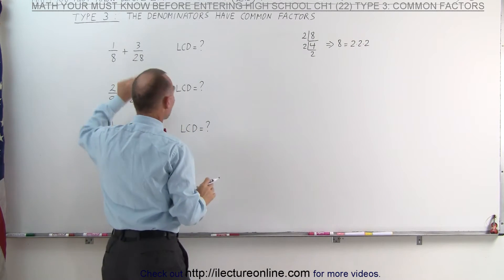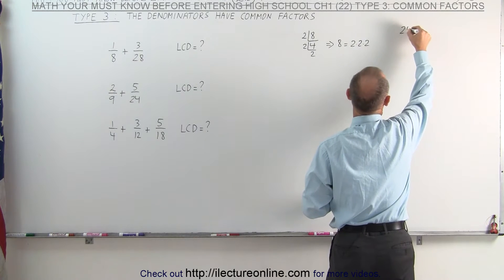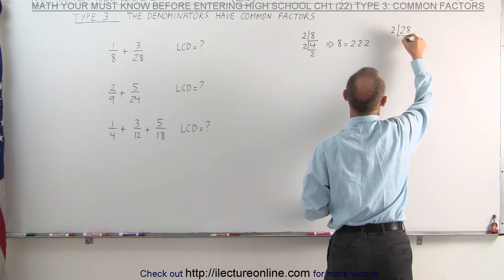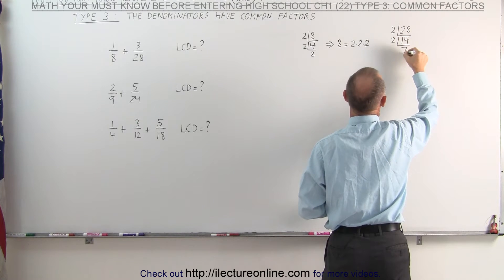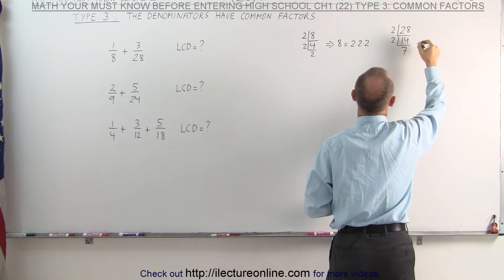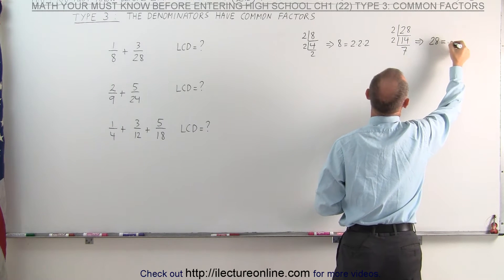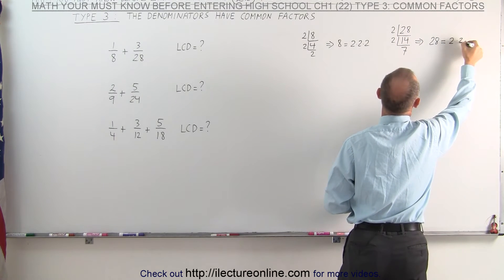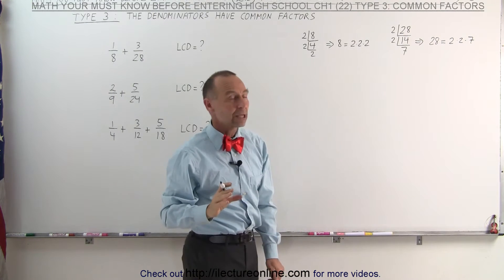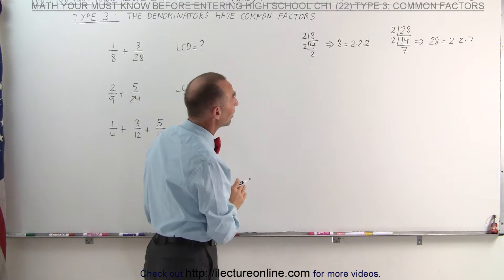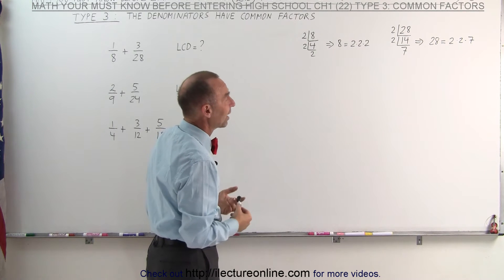We do that again with the second denominator. We take that denominator, we divide it by the lowest prime number, 2, which gives us 14. Since it's still even, we can divide it by 2, which gives us 7. 7 being a prime number tells us that 28 can be written as the product of 2 times 2 times 7. So now we've taken both of our denominators and written them as products of their prime factors.